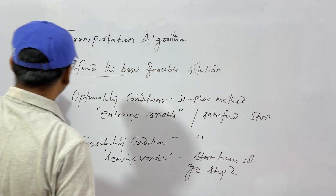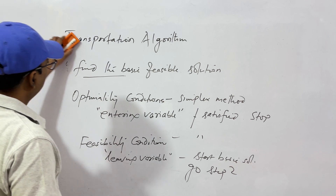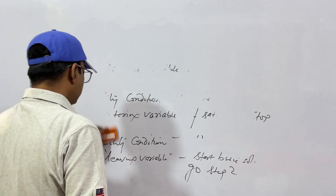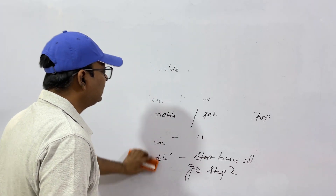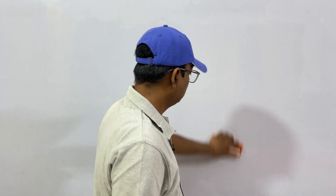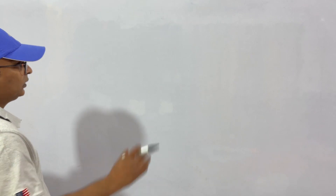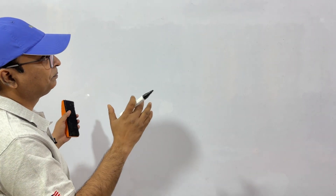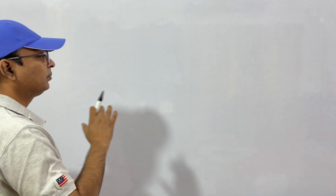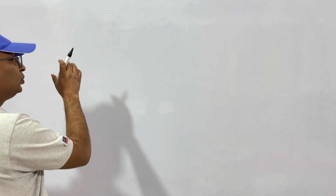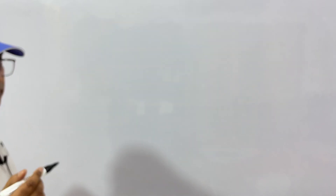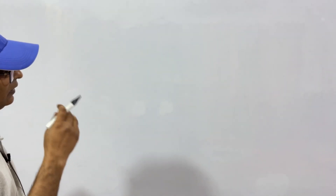First is to find the basic feasible solution. We have 3 different methods: first is called the North-West corner method, second is called the least cost method, and third is called the Vogel approximation method. Let us start with the North-West corner method. I will take an example and construct a transportation table with all transportation costs, supply, and demand.